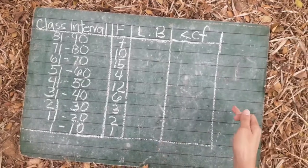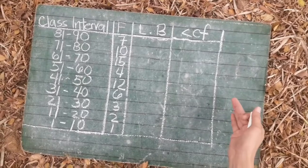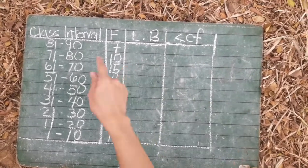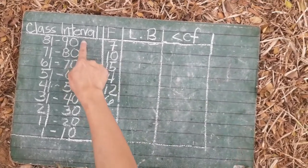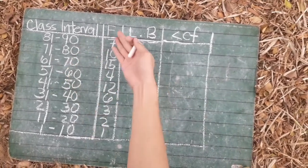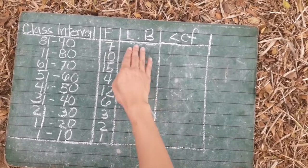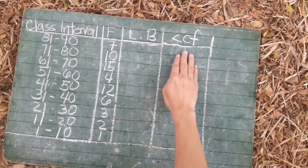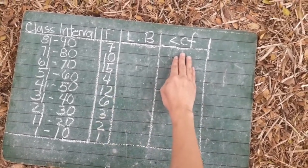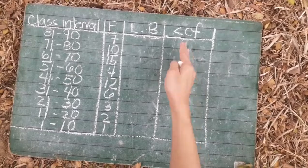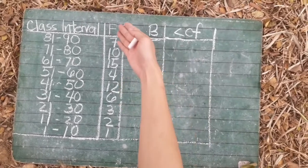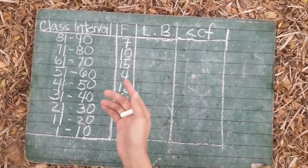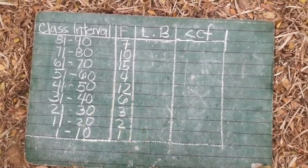So, this is the daily allowance of 60 students. This is the class interval. We have frequency, we have a lower boundary, we have a cumulative frequency. As you can see, we already have a frequency which is the tally of the class interval.